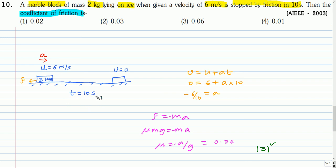So from this we are finding the acceleration. So we can use this equation of motion v equal to u plus at. Final velocity is 0, initial velocity is 6, and the time taken for the velocity to drop from 6 to 0 is 10 seconds. So from this we get the acceleration of minus 6 by 10.